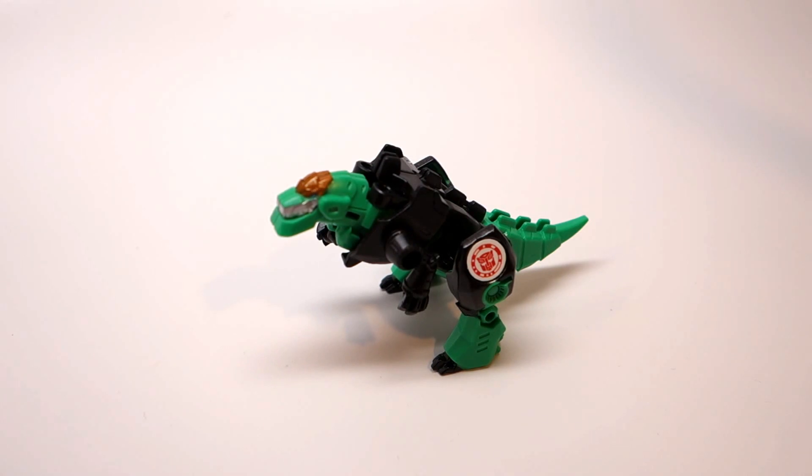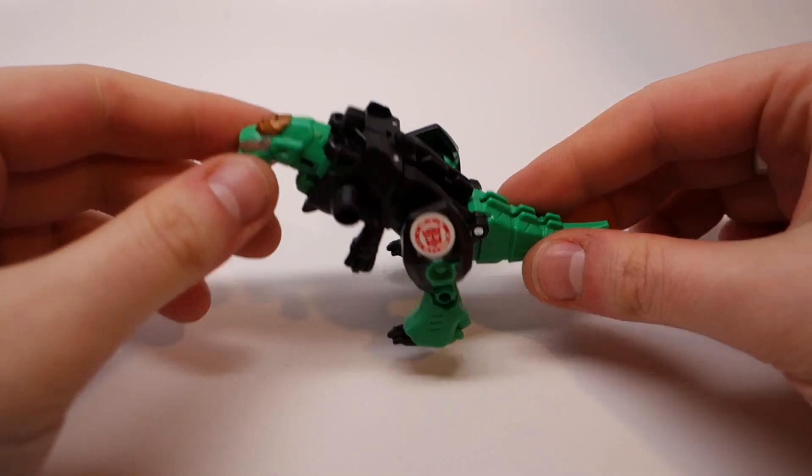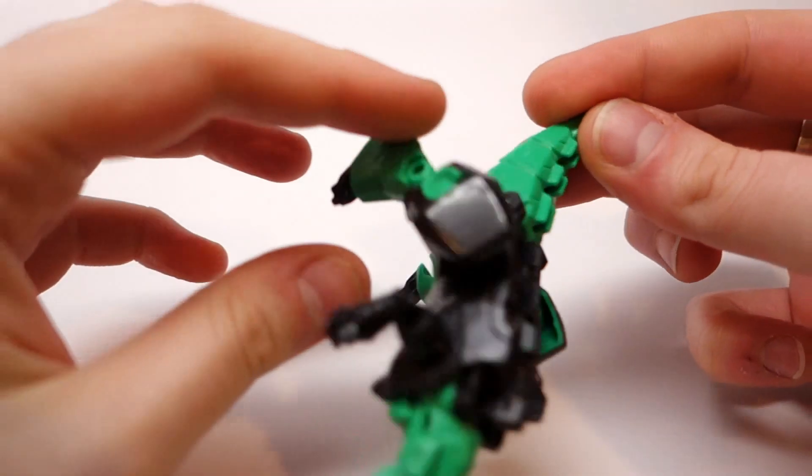Hello and welcome to the video review for Transformers Robots in Disguise 2015 Legion Class Grimlock. Grimlock is a green Tyrannosaurus Rex this time.